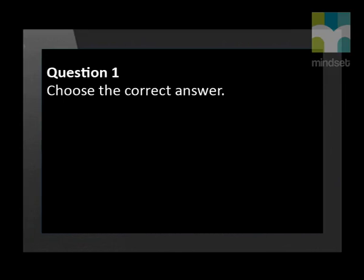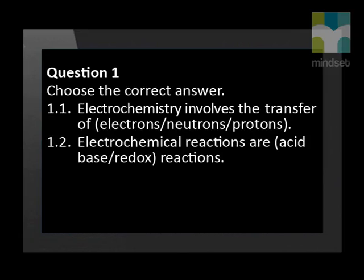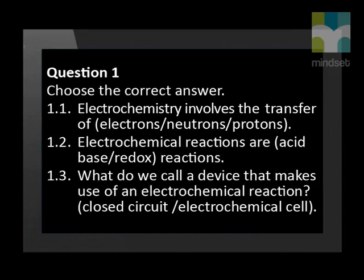In question one, you need to choose the correct answer. Electrochemistry involves the transfer of electrons, neutrons, or protons. Electrochemical reactions are an acid, a base, or a redox reaction. What do we call a device that makes use of an electrochemical reaction? Your options are a closed circuit or an electrochemical cell.